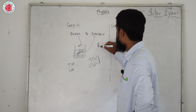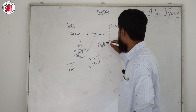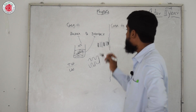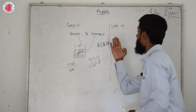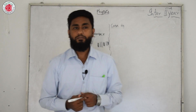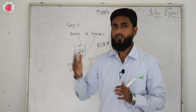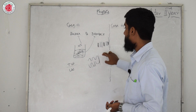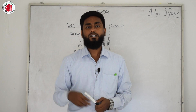For longitudinal waves in Case 1, the wave has compressions and rarefactions. Upon hitting the denser medium, the compression becomes a rarefaction. So the conclusion for Case 1: for transverse waves hitting a denser medium, crest becomes trough; for longitudinal waves, compression becomes rarefaction.